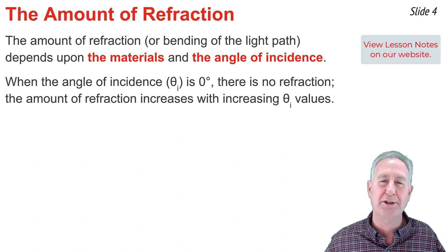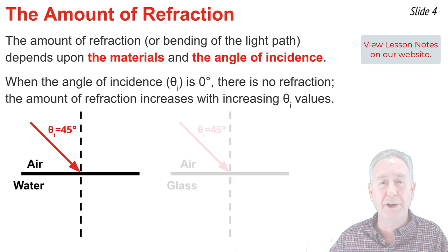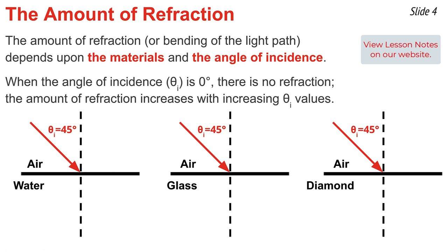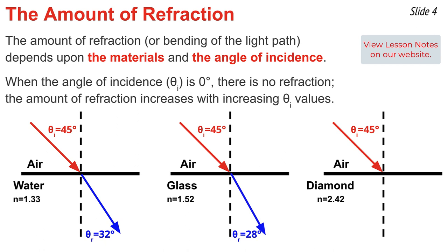The amount of refraction also depends upon the materials on opposite sides of the boundary. Consider light passing from air into water, into glass, and into diamond. The angle of incidence is 45 degrees in each case, and the index of refraction of air is 1.00 in all three situations. For air into water, the light bends 13 degrees closer to the normal, giving an angle of refraction of 32 degrees. For air into glass, the refraction is 17 degrees, placing the angle of refraction at 28 degrees. And for air into diamond, the refraction is 28 degrees, making the angle of refraction 17 degrees. This data supports the claim that the amount of refraction depends upon the difference in the index of refraction of the two materials.